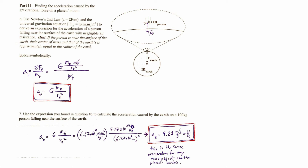The acceleration equals big G times the mass of the Earth divided by the radius of the Earth squared. Plugging in the known values for the mass of the Earth, the universal gravitation constant, and the radius of the Earth gives 9.81 meters per second per second. Newton's law of universal gravitation paired with Newton's second law of motion can predict this value just from the known mass and radius of the Earth.